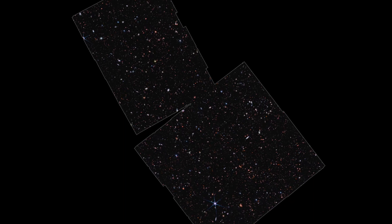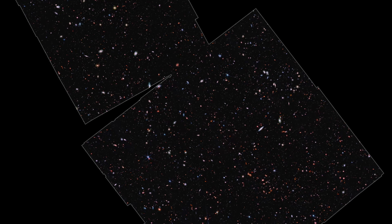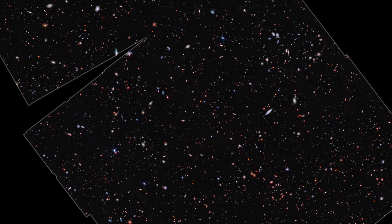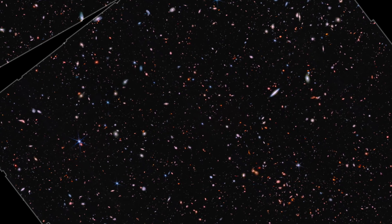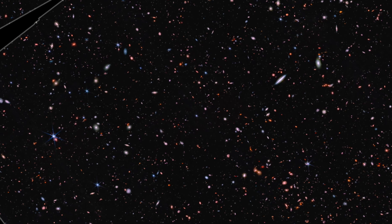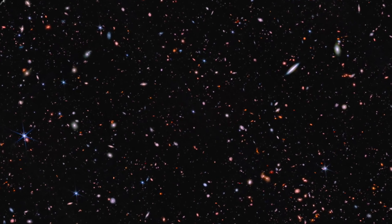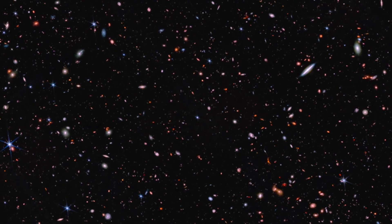An international team of astronomers using data from NASA's James Webb Space Telescope has reported the discovery of the earliest galaxies discovered to date. The light from these galaxies took more than 13.4 billion years to reach Earth, and these galaxies originated less than 400 million years after the Big Bang. That is when the age of the universe was only 2% of its present age.